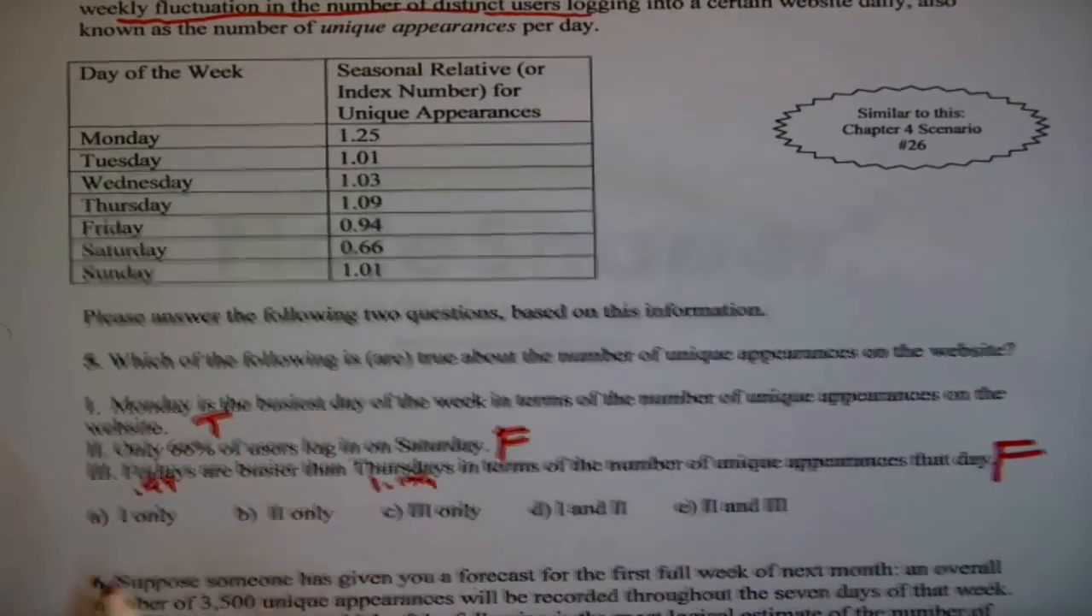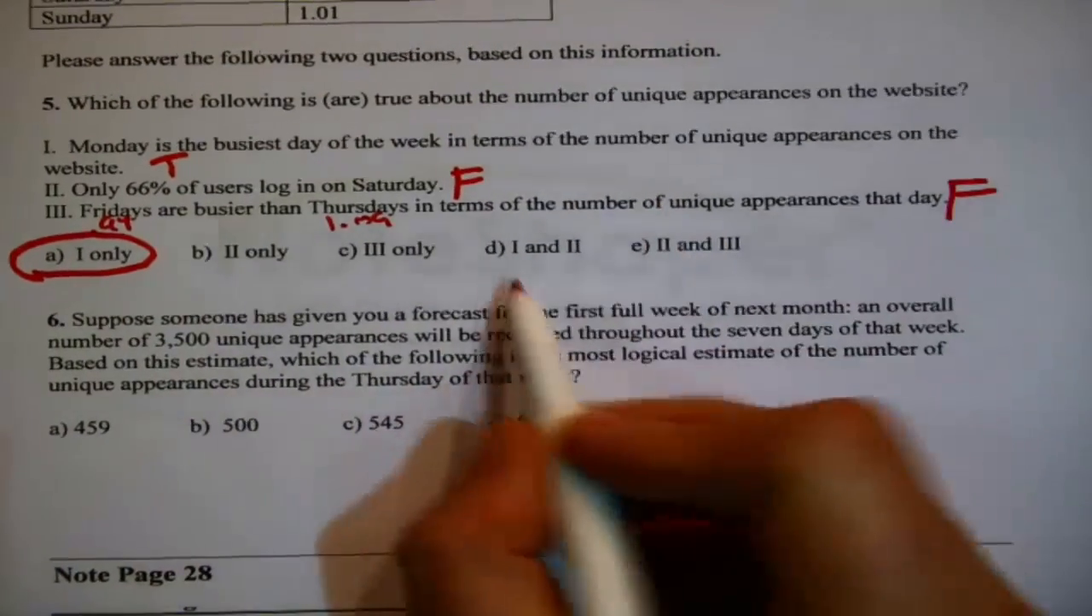It looks like Thursday's are busier than Friday's. So only the top survived here. So that is one only, so that one would have been partial credit.